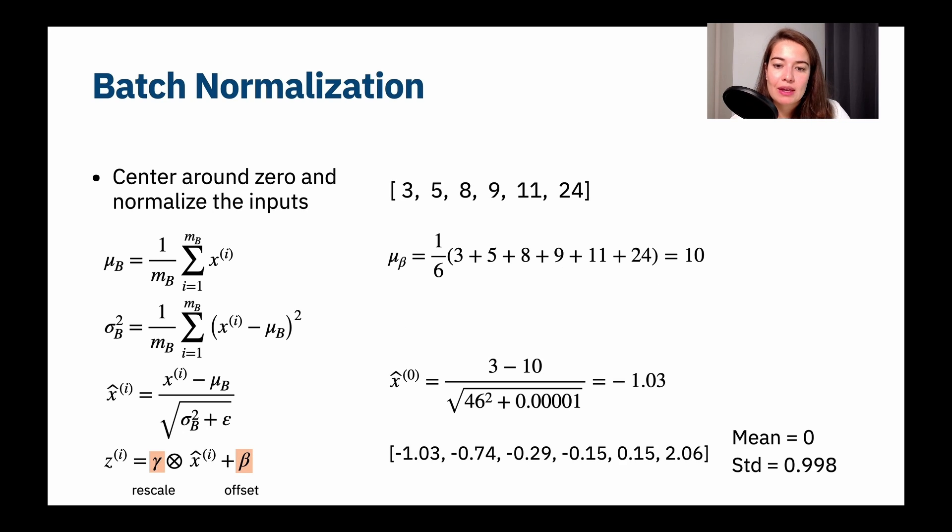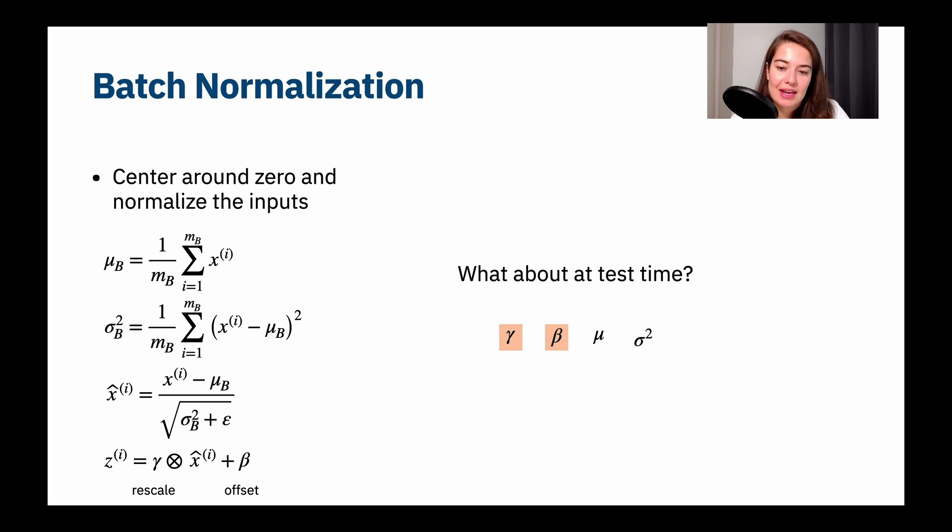This has all been training. So we have been training our network, and we found these values, and then we did it again and again and again. But this has been training. So what happens while we're testing? So these two values, rescale and offset value, their best optimal values are learned during training. So they are basically parameters that need to be learned, right? They give one value to them, the model doesn't perform super well, we change their values and see when the model performs best.